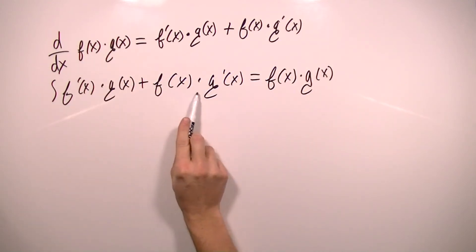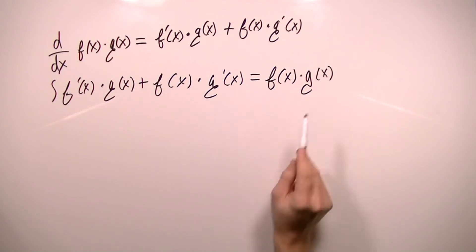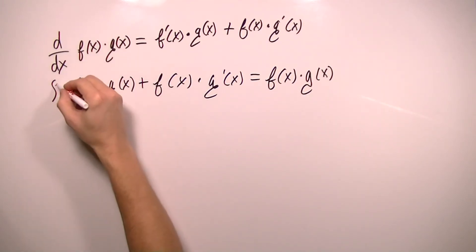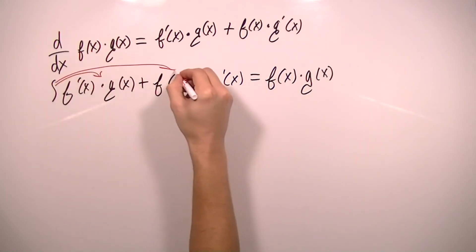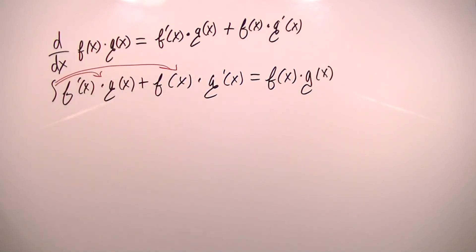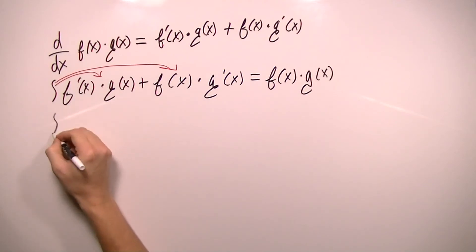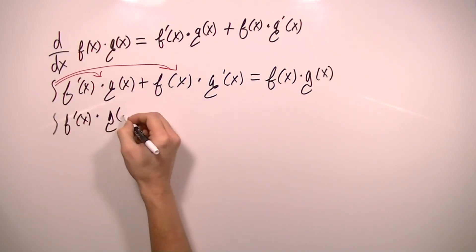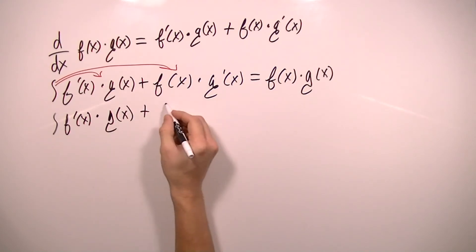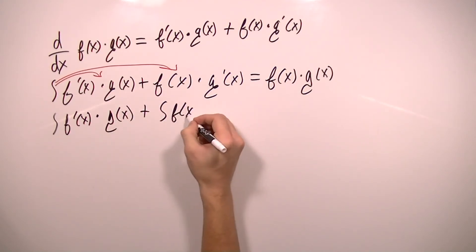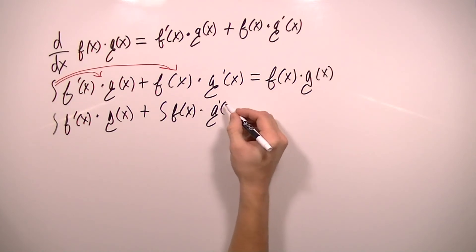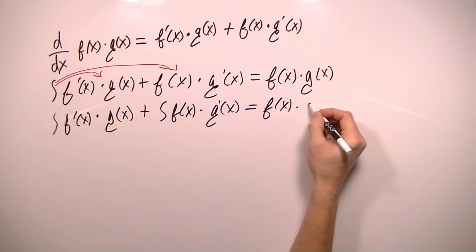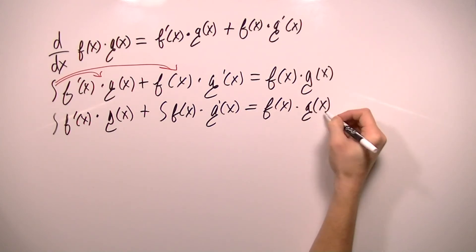And since the sum rule of integration says that integration across a sum is equal to the sum of the integrals, I'm going to rewrite this as: the integral of f′(x)·g(x) plus the integral of f(x)·g′(x) equals f(x)·g(x).